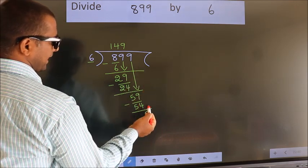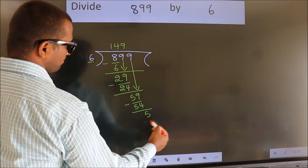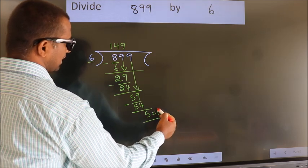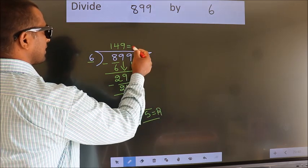No more numbers to bring down. So we stop here. This is our remainder. This is our quotient.